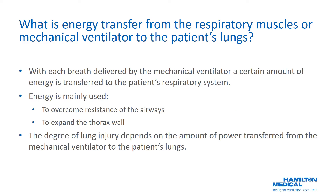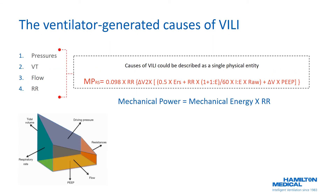With each breath delivered by the mechanical ventilator, a certain amount of energy is transferred to the patient's respiratory system. This energy is mainly used to overcome resistance of the airways and to expand the thoracic wall. The degree of lung injury depends on the amount of power transferred from the mechanical ventilator to the patient's lungs. The causes of VILI can be grouped together and described as a single physical entity reflected in an equation where each component has its own weight in the total calculation of mechanical power.